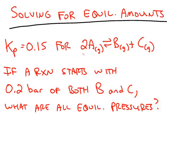here is a reaction where the Kp value is not really, really big, it's not really, really small. Kp is 0.15, so we know we're going to have a lot of both reactants and products at equilibrium. We start a reaction with 0.2 bar of both B and C, and we want to calculate all of the equilibrium pressures.